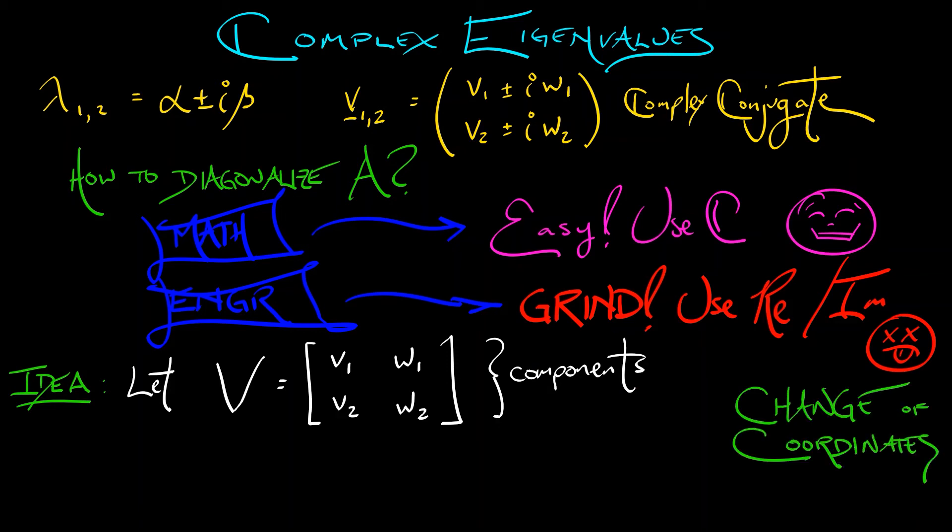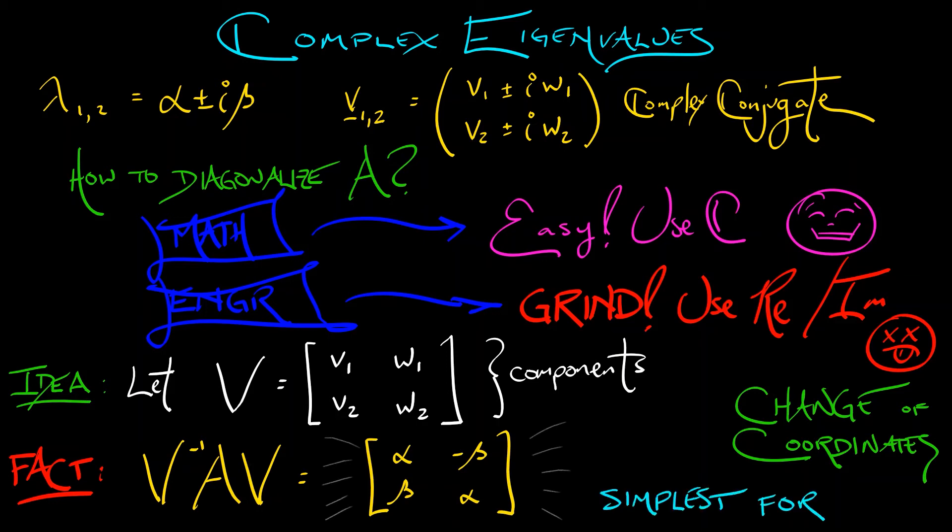What happens when we do so? Here's a fact. If I conjugate A by this matrix capital V, if I compute V inverse A V, then what I get is the matrix with entries alpha, beta, minus beta, alpha. This is not diagonal, but it's the simplest real form that we can convert the matrix A into.